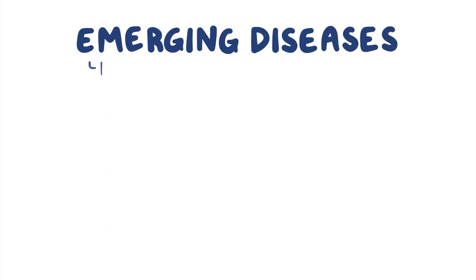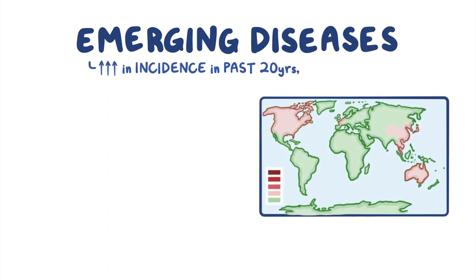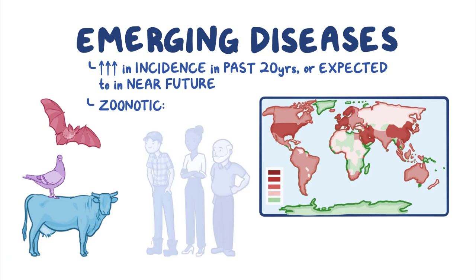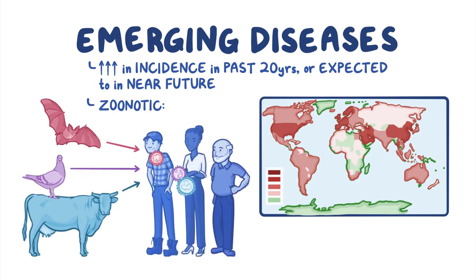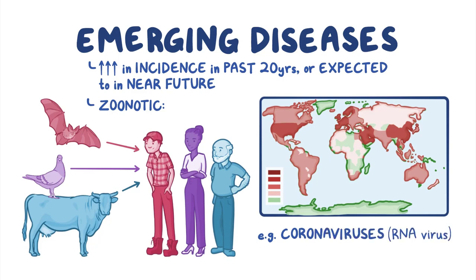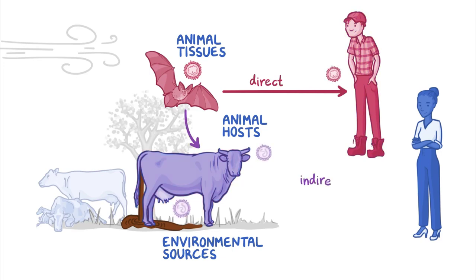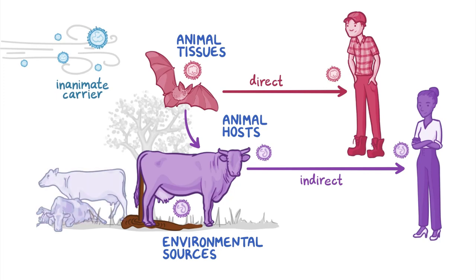Emerging diseases are illnesses that have increased in incidence during the past 20 years or are expected to increase in the near future. Some are zoonotic, meaning they are caused by pathogens that have hopped from infected animals to humans. A few examples are coronaviruses, a group of RNA viruses that can cause a variety of respiratory illnesses in humans. Transmission of emerging zoonotic diseases can occur through animal tissues, environmental sources, or animal hosts, either directly or indirectly through another animal, or even an inanimate carrier like the air. They can even reemerge through similar mechanisms if the pathogen has a natural reservoir, which could be an animal where it naturally survives and reproduces.